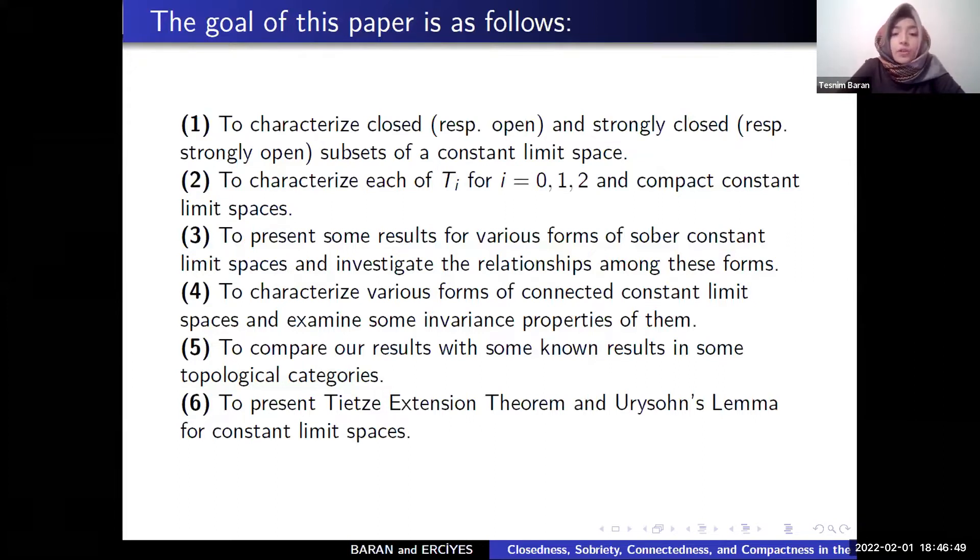Three, some results for various forms of sober constant limit space and investigate relationships among these forms. Four, we characterize various forms of connected constant limit spaces and examine some invariance properties of them. Five, we compare our results with some known results in some topological categories, and we present Tietze Extension Theorem and Urysohn's Lemma for constant limit spaces.